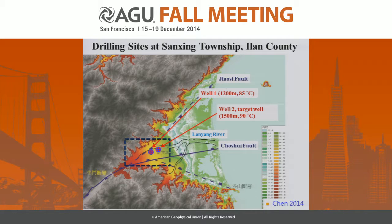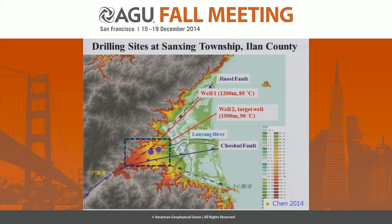The shallow wells have depths lower than 500 meters. Only two wells have depths over 1,000 meters. One well is 1,200 meters deep, with temperature up to 85 degrees C. The geothermal gradient is also high here, about 50 degrees C per kilometer.